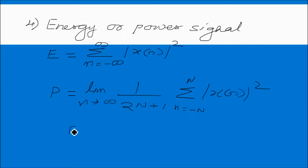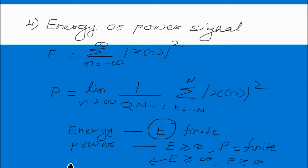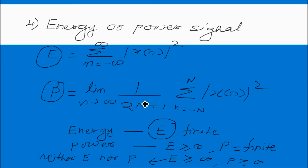Any signal is called an energy signal if its energy is finite. It is called a power signal if the energy is greater than or equal to infinity but power is finite. If both energy and power are greater than or equal to infinity, then it is called neither an energy nor a power signal. We use these formulas to put in values and calculate energy and power.